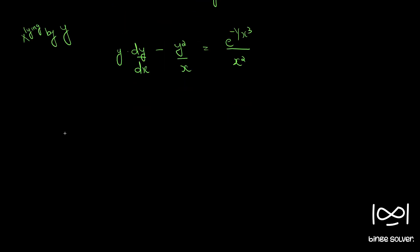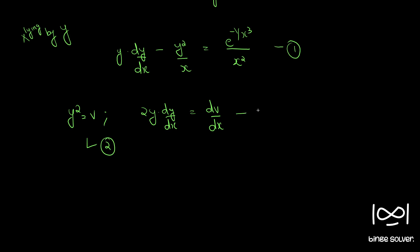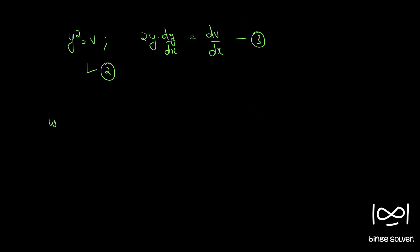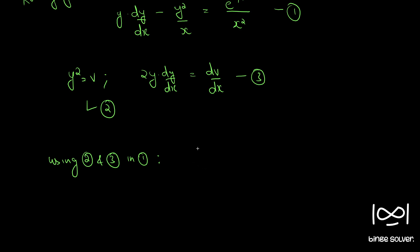Now if we put y squared equal to v and differentiate both sides, we have 2y into dy by dx equal to dv by dx. Using these in equation 1, y into dy by dx becomes 1 by 2 into dv by dx.